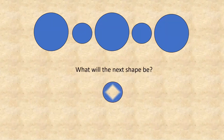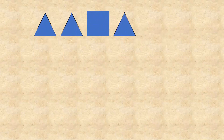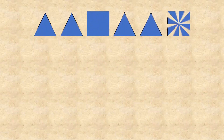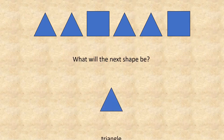Next: triangle, triangle, square, then again triangle, triangle, square. As you can see, two triangles then one square repeat. So the next shape is triangle. Next: vertical rectangle, horizontal rectangle, hexagon — three shapes are repeating again and again.